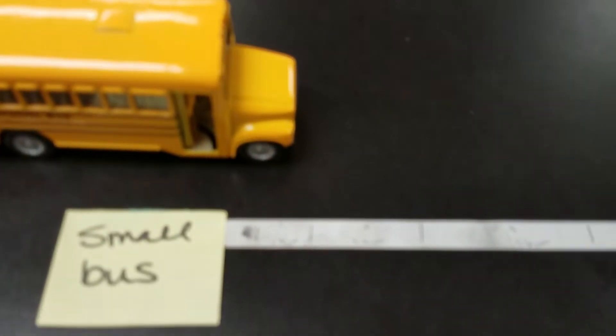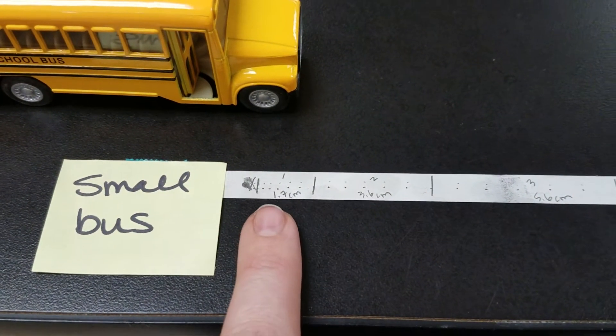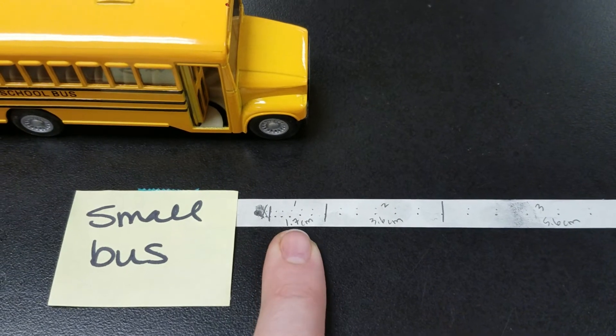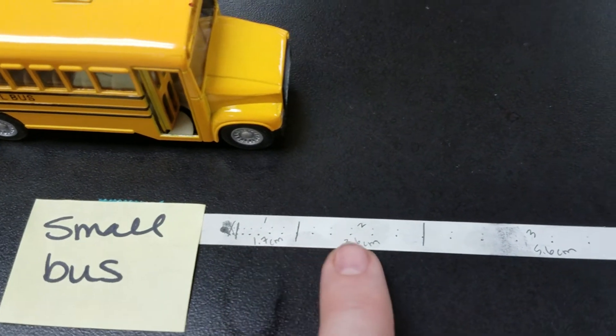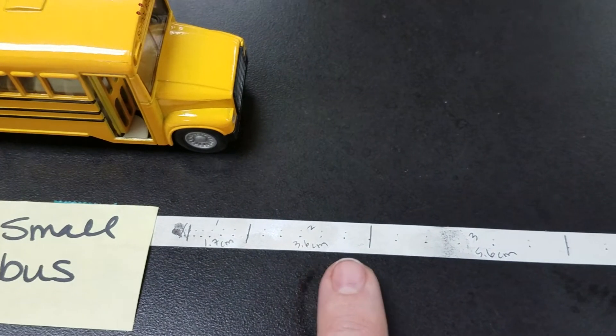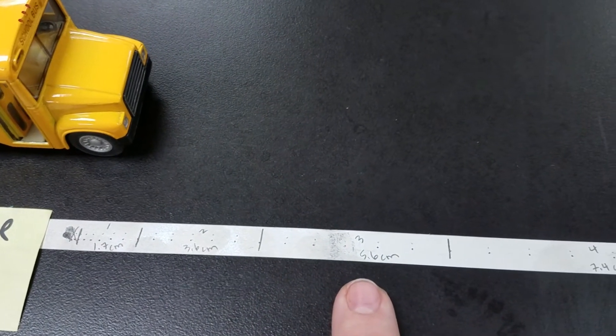Now for our measurements. Remember this is going to be written in the delta D column. 1.7 centimeters, 3.6 centimeters, 5.6 centimeters, 7.4 centimeters, 9.2 centimeters.